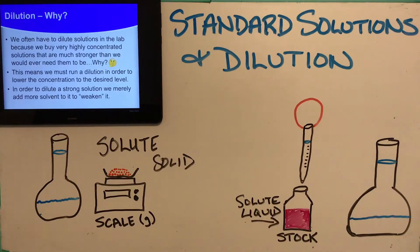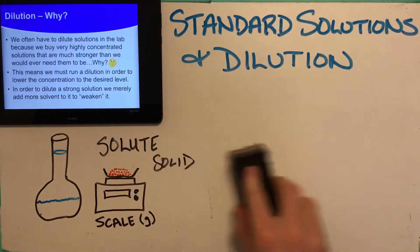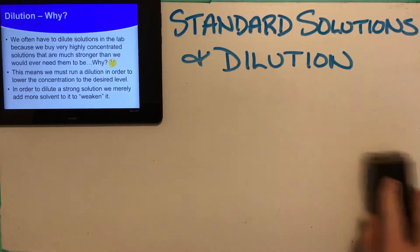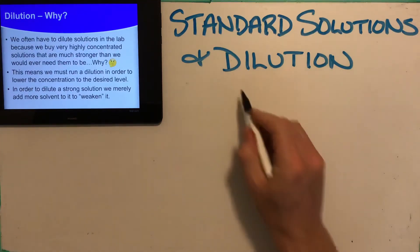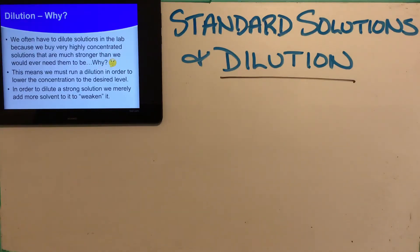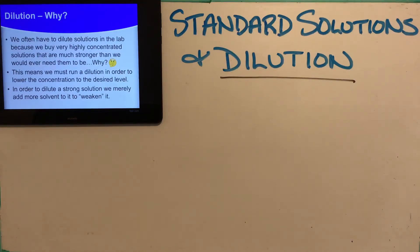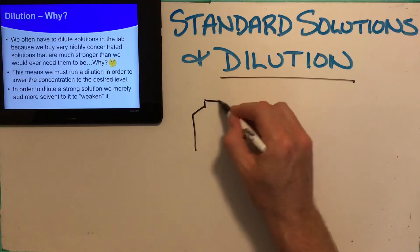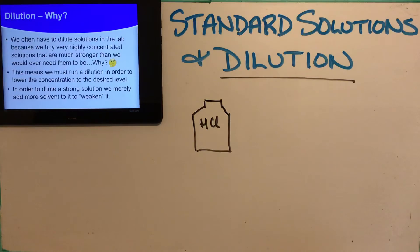The next topic is dilution. Quite often before lab work, we have to take a solution that is highly concentrated and dilute it down into a weaker, lower-concentration solution. Why would we buy a big container of very strong stuff rather than weaker stuff? Let's say we bought a jug of HCl — hydrochloric acid. We might buy it at 12 molar, but most of our labs use HCl that is 1 molar.